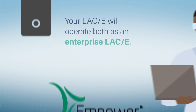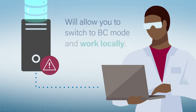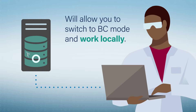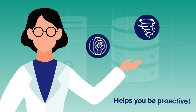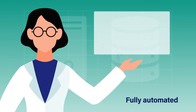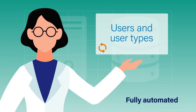Your BC LACE will operate both as an Enterprise LACE and, during critical disruption, will allow you to switch to BC mode and work locally. BC LACE with SecureSync helps you be proactive during a disaster. It's fully automated and periodically synchronizes key information, such as projects, custom fields, methods, users and user types, from the Empower Enterprise server to your local BC LACE database.